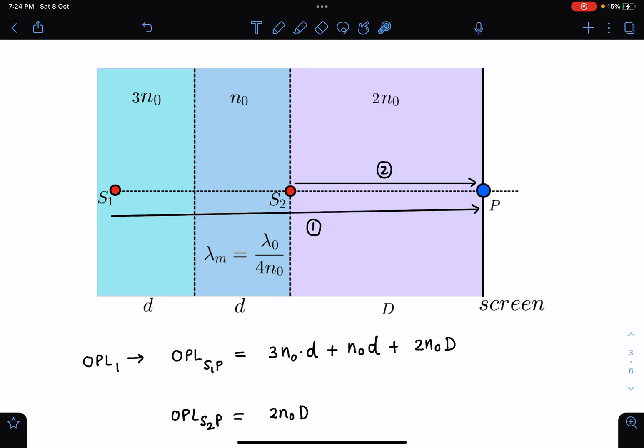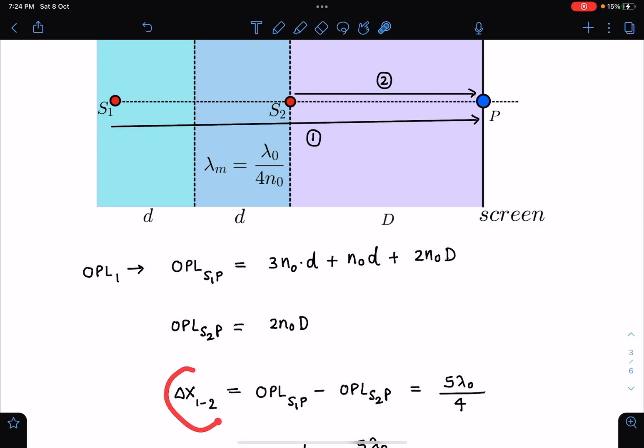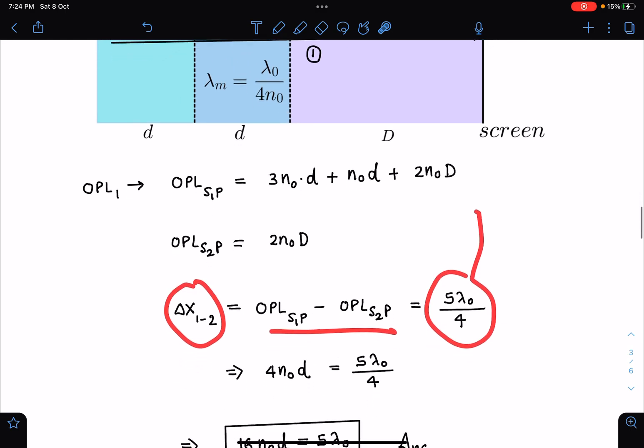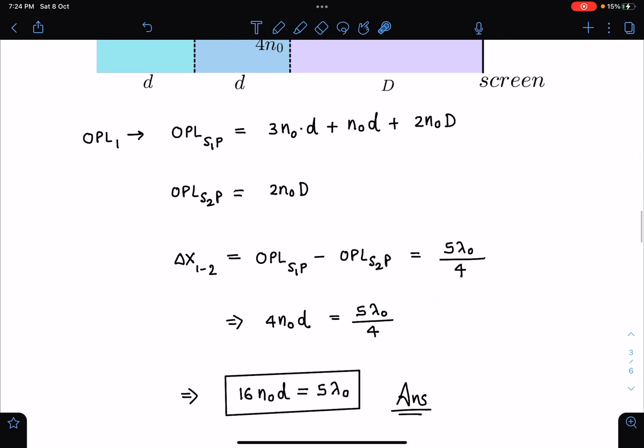Now when I take the difference of these two I will get the path difference between these two and I'll equate it to 5 lambda by 4. So in this situation you'll be getting, we are getting from here 3 and 4, 2 and 2 will get cancelled. So 4 n0 into small d is equal to the path difference for fifth maxima which is 5 lambda air, so 5 lambda 0 by 4. So from here I am getting the condition that 16 n0 d is equal to 5 lambda 0, and this is going to be the final answer for this problem.